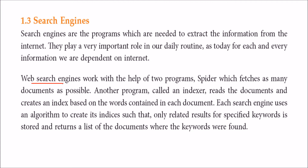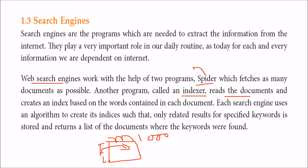A web search engine has a spider, also called a crawler, which crawls through different pages. When pages are found, they are indexed by a program called an indexer. Think of it like a book index — you go to the index to find your content rather than reading all 1000 pages. Each search engine uses a complex page ranking algorithm to return results based on the keywords entered.